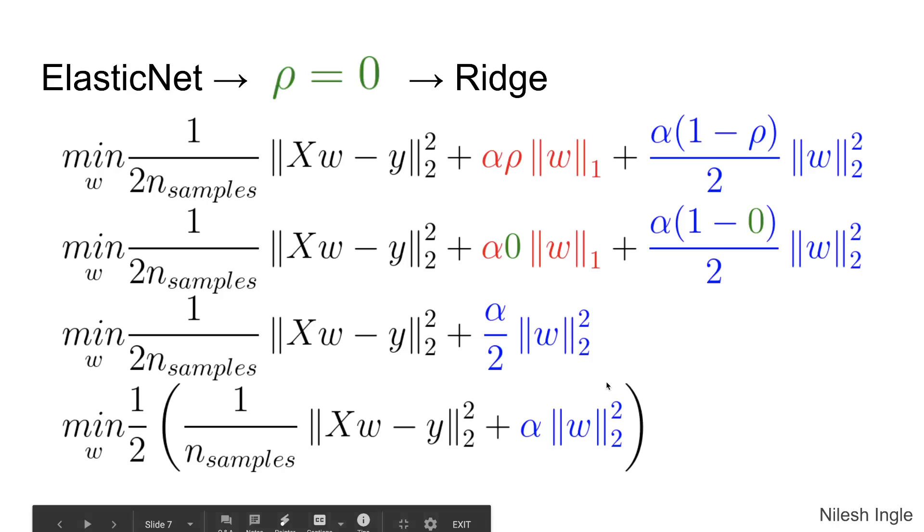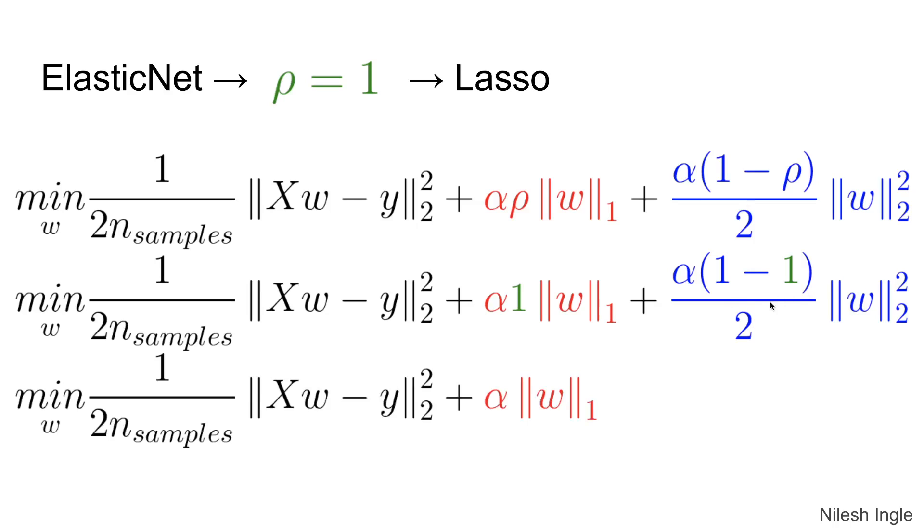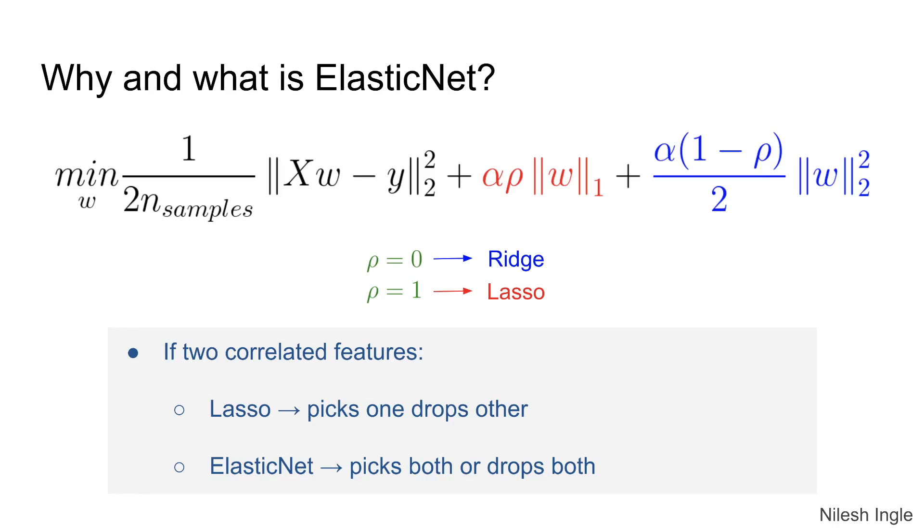Now if we change the value of rho to 1, then this term goes away because that will become zero - 1 minus 1 is 0 - and thus we are left with just this term and that is what we see in the lasso regression. And thus the model would then be moved towards the lasso regression. So ElasticNet offers both these features which can be used by tuning the value of rho.